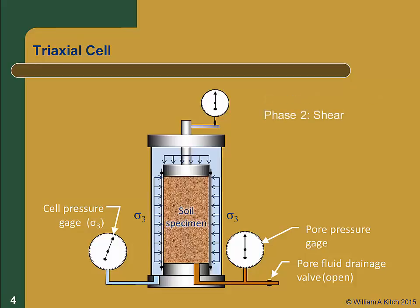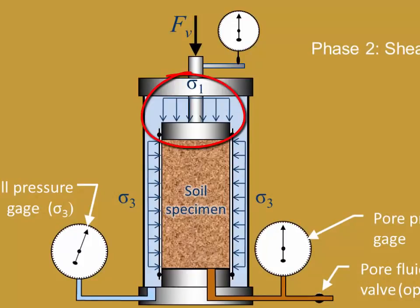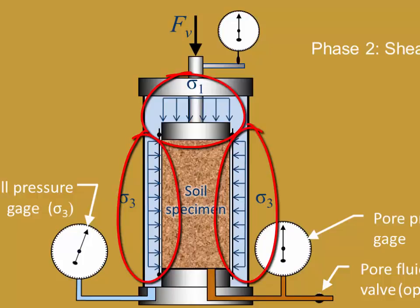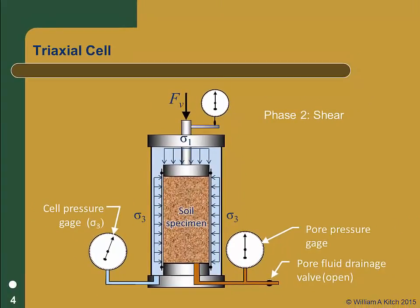The second phase of the test is the shear phase. During this phase, a load is applied to the piston at the top of the cell, increasing the stress at the top of the specimen. Since there are no shear stresses on either the top or the sides of the specimen, these are principal planes. The major principal stress sigma1 is applied to the top of the specimen, and the cell pressure provides the minor principal stress sigma3 to the sides. The vertical stress is gradually increased until the specimen fails. This is a relatively simple schematic; actual cells are more complicated and have additional drainage lines.